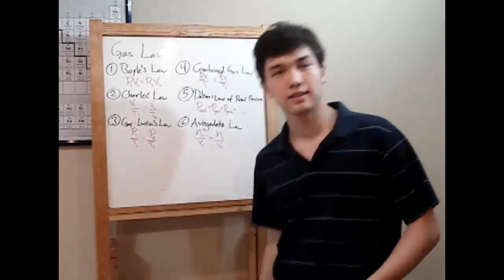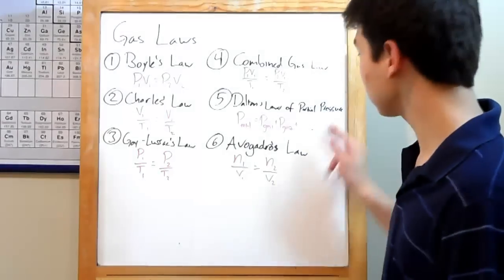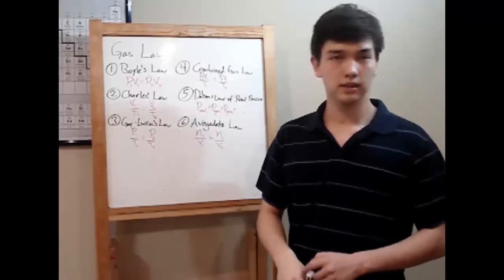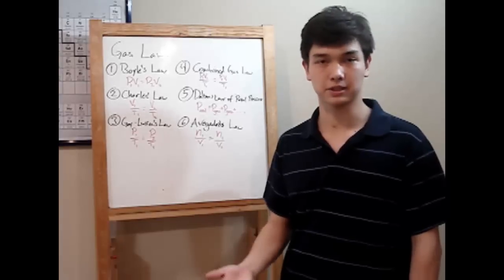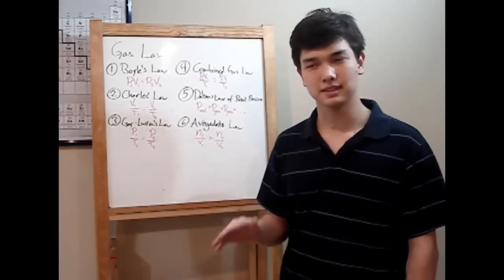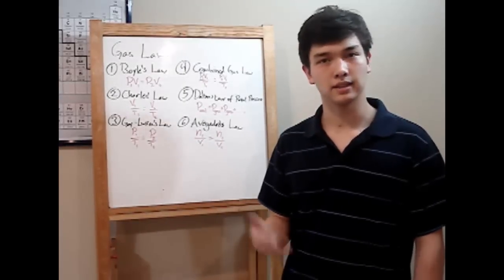Dalton's law of partial pressure. The textbook will probably say something like, the total pressure of gases in a system is the sum of the partial pressures of these gases. Easy stuff, actually. All that means is add up the pressures.